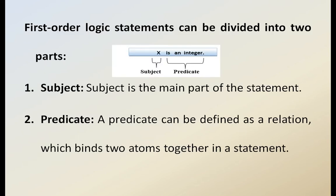First order logic statements can normally be divided into two parts: the subject and the predicate. The subject is considered the main part of the statement. The predicate can be defined as a relation — it is the relationship between two atoms or two objects in the statement. For example, in 'X is an integer,' X is the subject and 'is an integer' is the predicate.